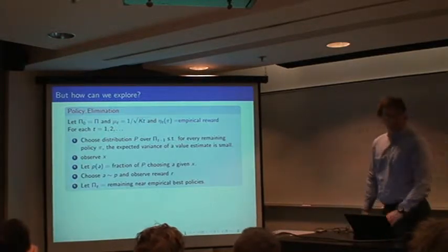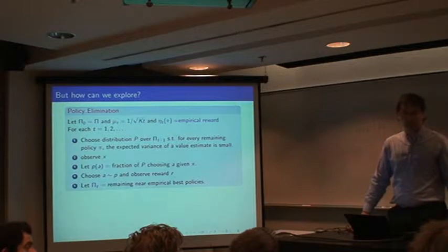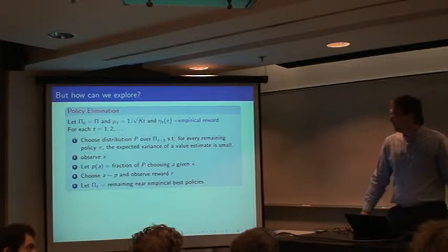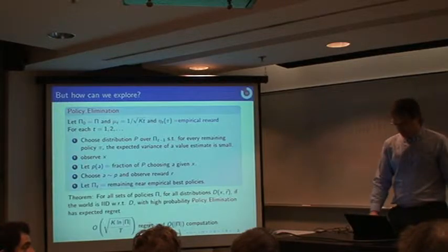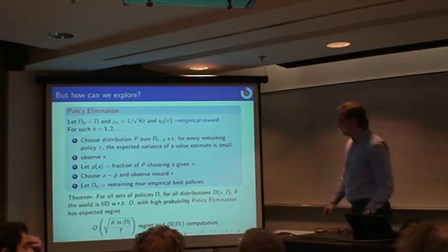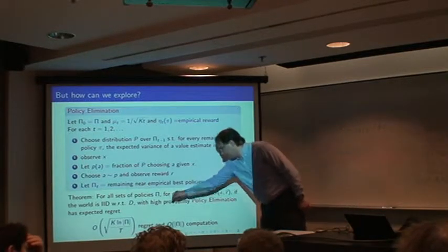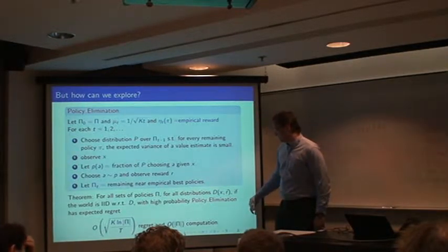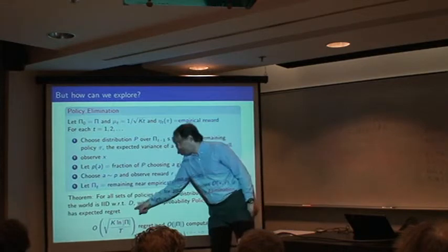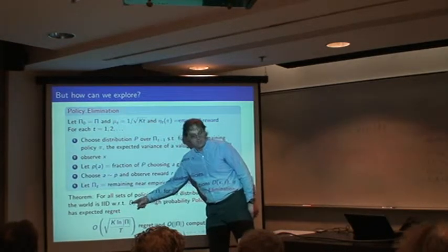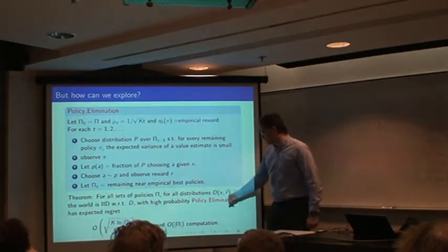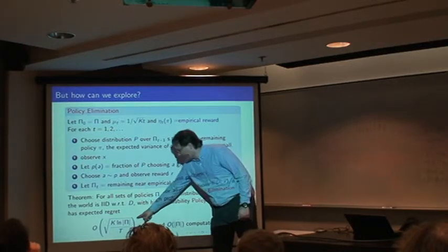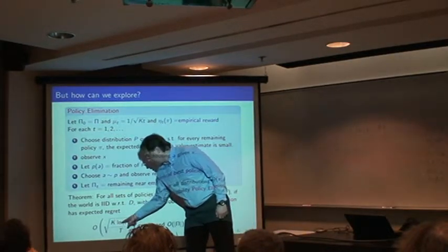So that's only reducing very slowly that set of policies. So what you can prove is that for all types of policies, for all distributions, imagine the world as i.i.d. distributed according to some distribution generating the data. So with high probability, you expect regret is order of k log number of policies.